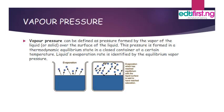Vapor pressure can be defined as the pressure formed by the vapor of the liquid or solid over the surface of the liquid. This pressure is formed in thermodynamic equilibrium states in a closed container at a certain temperature. The liquid evaporation state is identified by the equilibrium vapor pressure. If the temperature of a liquid is increased, the molecules lose their bonds and move away from each other, taking the shape of the container or leaving the surface or the container entirely.